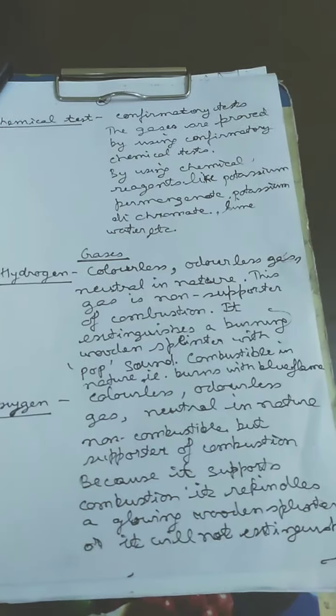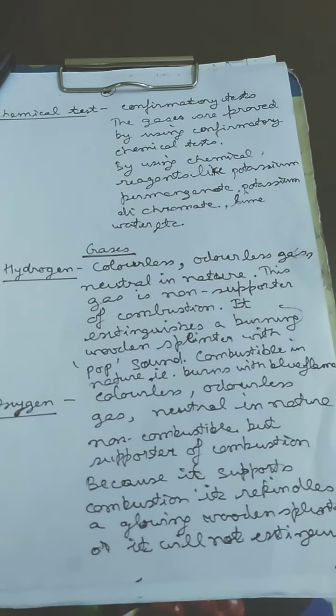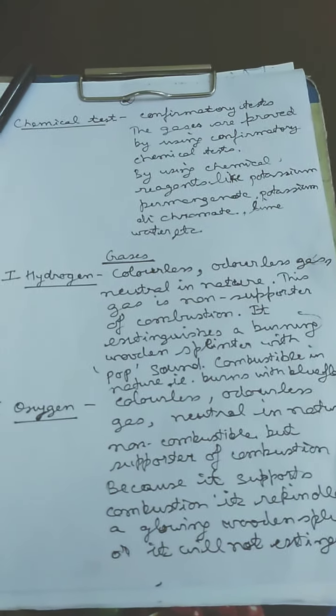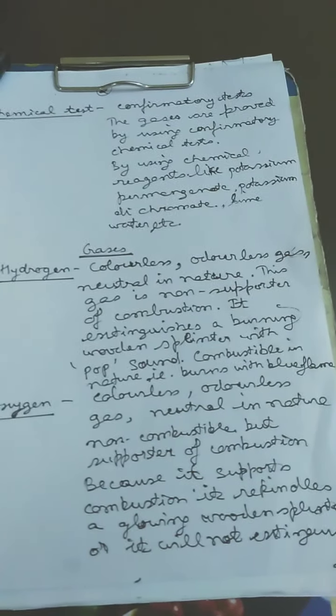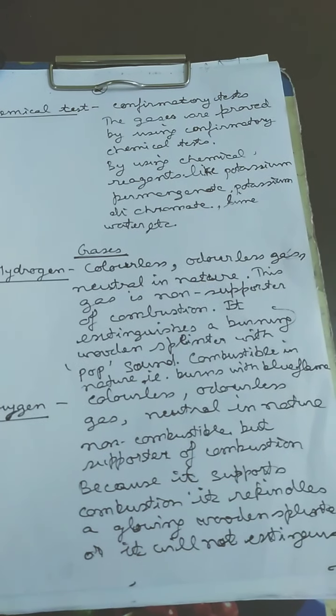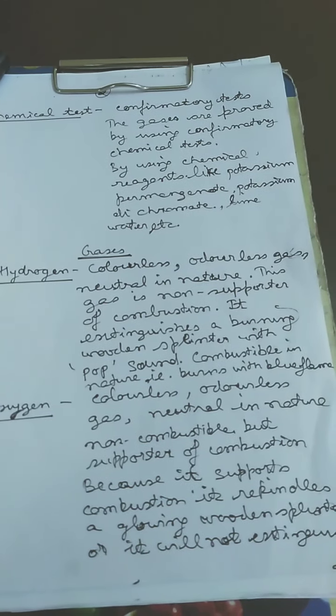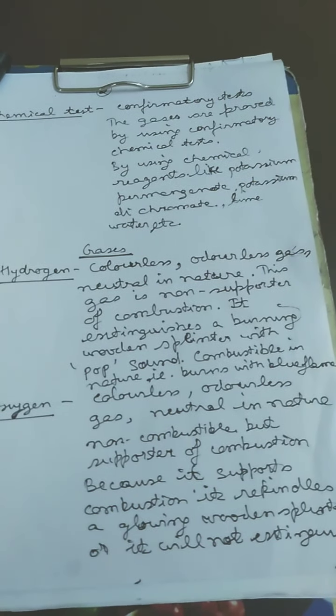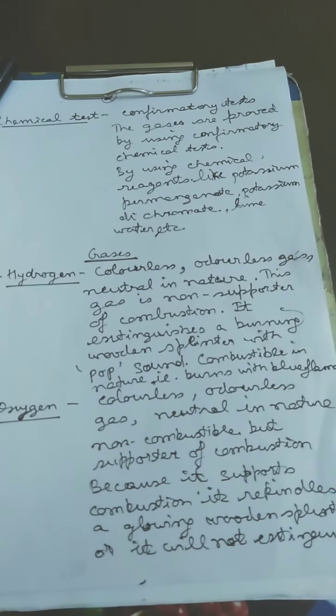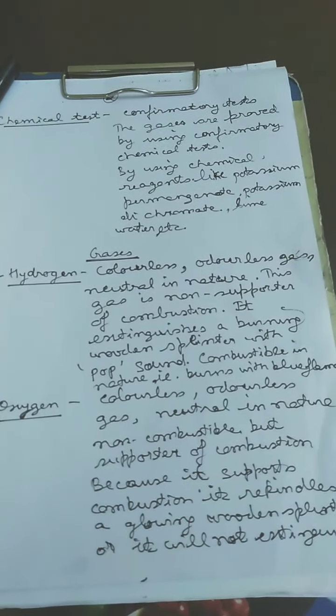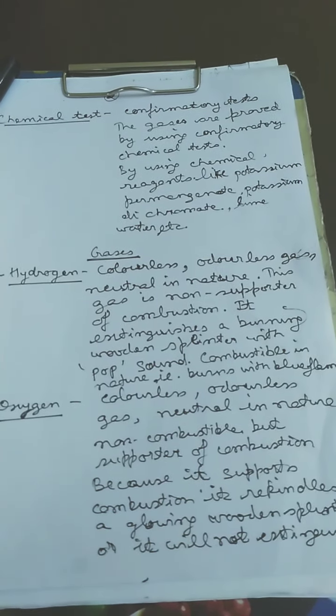Next one is oxygen. You are also familiar about this gas. We all know that this gas is a supporter of combustion and 21% of oxygen is present in the atmosphere and only due to this gas things burns in air. This gas is colorless, odorless gas which is neutral in nature means it will again give no effect on either blue or red litmus paper. It is non-combustible in nature. It itself doesn't burn but it is supporter of combustion.